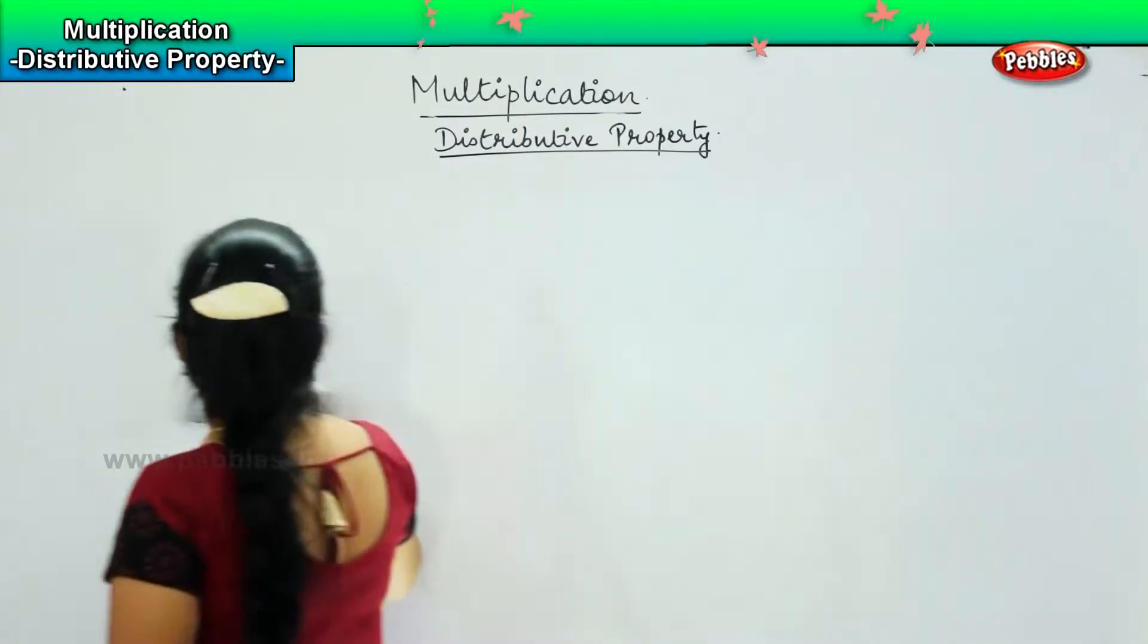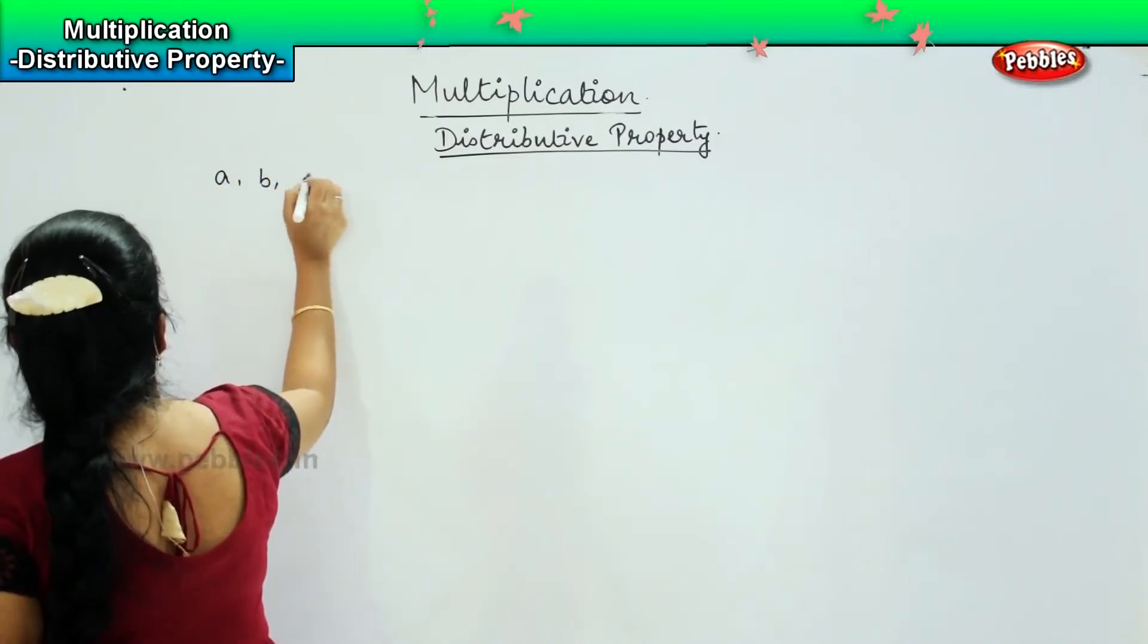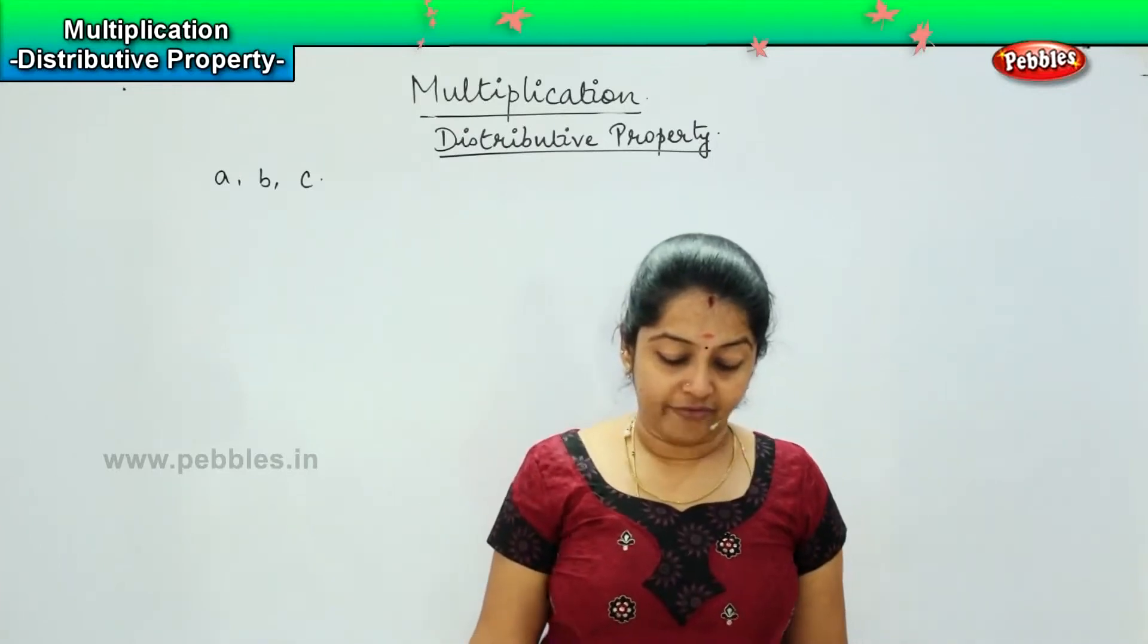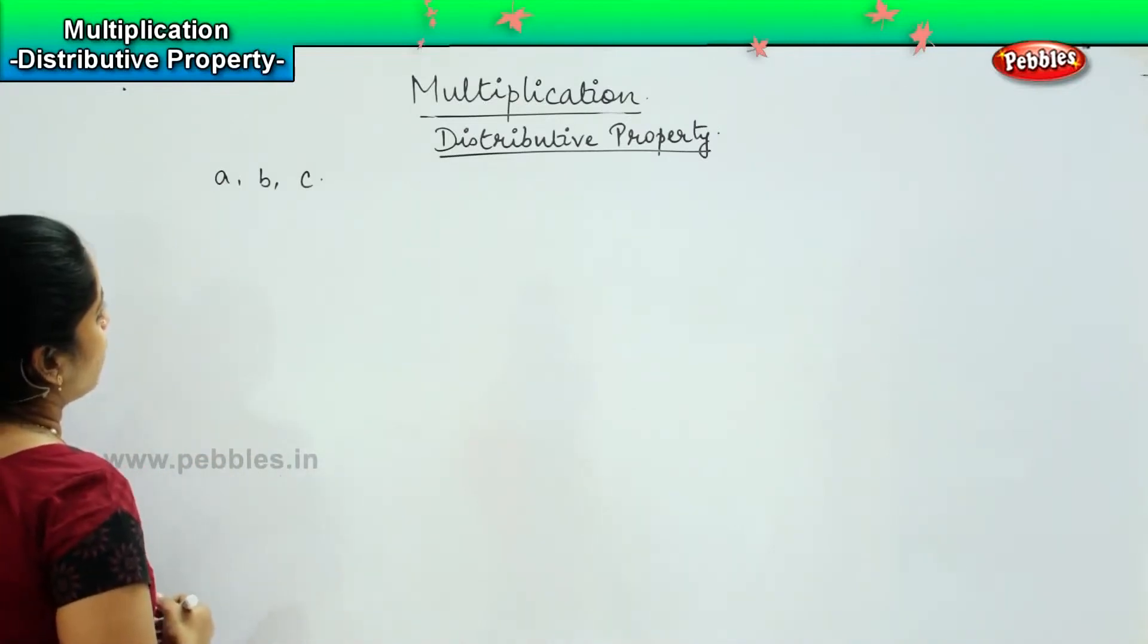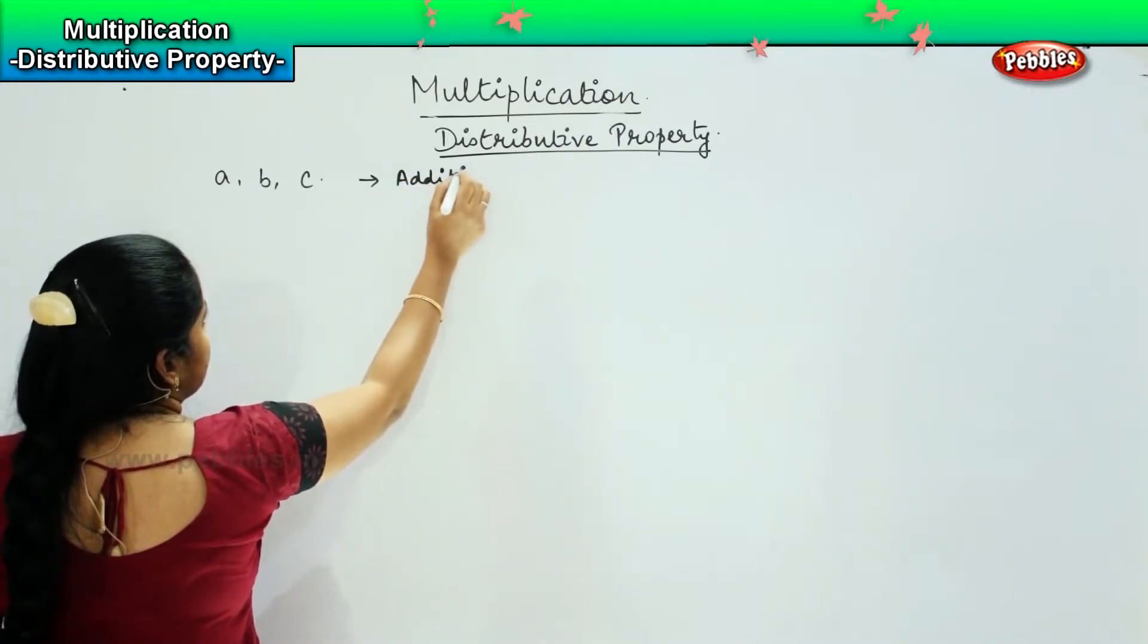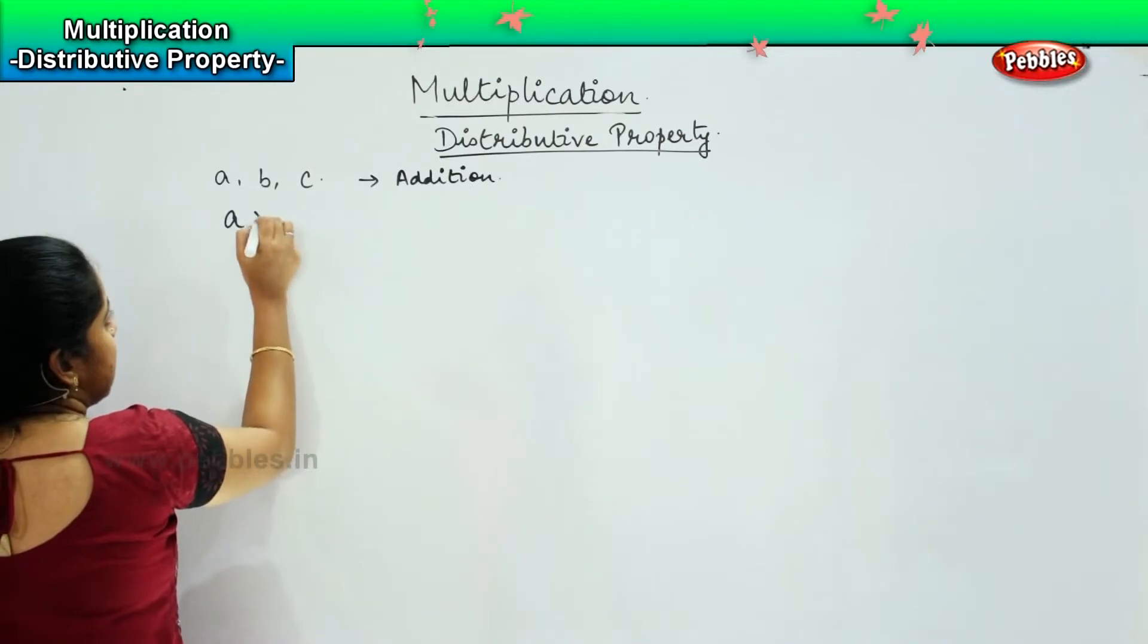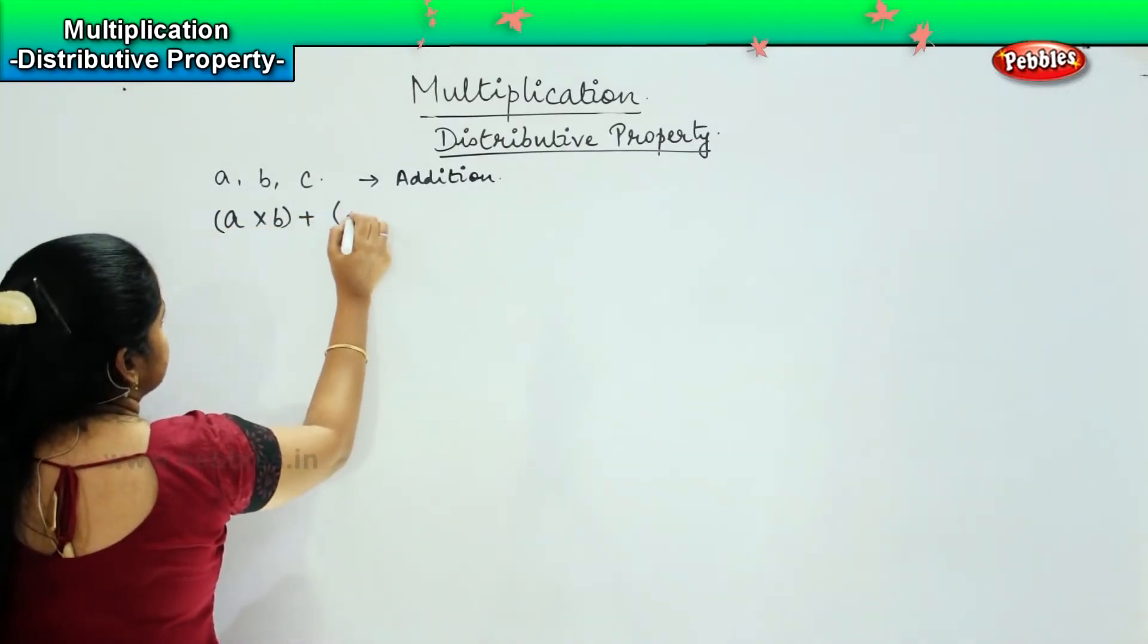For example, suppose if I have three numbers A, B, and C. Now, if I have to find out the product of it using addition, suppose if I am using it in the addition form, then how will I write? I can write as A into B plus A into C.